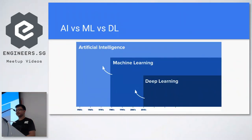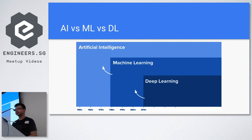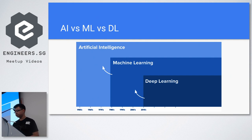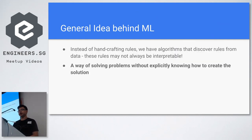To clear up some terminology: artificial intelligence is a general field in computer science centered around making machines smart and perform actions without much human intervention. One subfield is machine learning, which I'll elaborate on. And yet another subfield - deep learning - has gotten popular since around 2012.